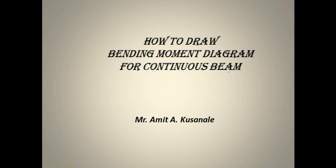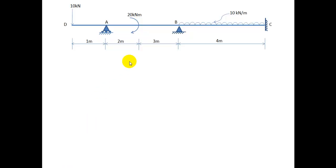Now let us come to the problem of continuous beam. This is a continuous beam. Continuous beam is an indeterminate type of structure. To draw a bending moment diagram for an indeterminate type of structure, we have to draw two diagrams and just overlap them. Then we will get the final bending moment diagram. This is the overall procedure of drawing a bending moment diagram for an indeterminate type of structure.